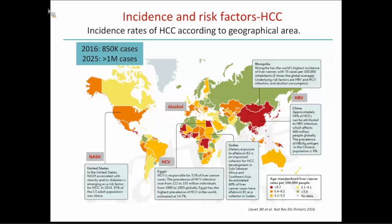The incidence of HCC in NASH: in cirrhotic patients it is around 1%, but the percentage of non-cirrhotic patients seems higher than in hepatitis C virus infection — probably around 30 to 40% do not have cirrhosis, as opposed to hepatitis C where 90% have cirrhosis. In hepatitis C-related HCC without cirrhosis, most have F3 fibrosis. There are F1-F2 cases in HCV too, but not many. In NASH, non-cirrhotic HCC is more prevalent.